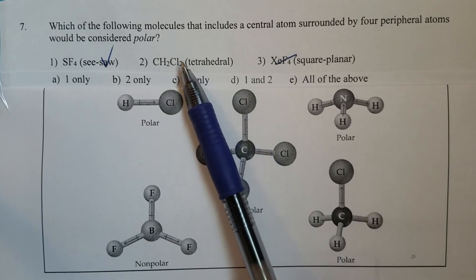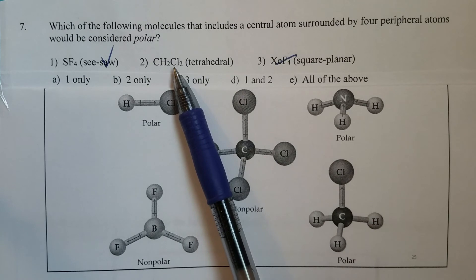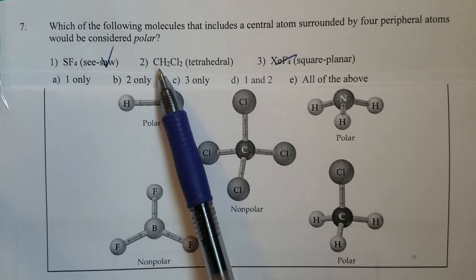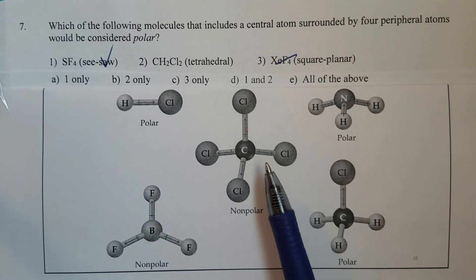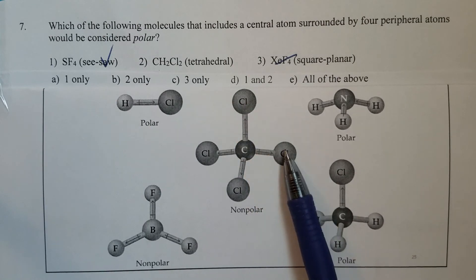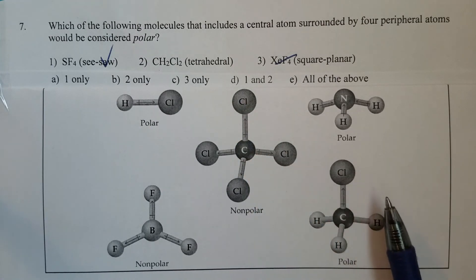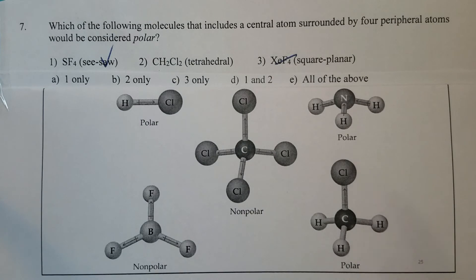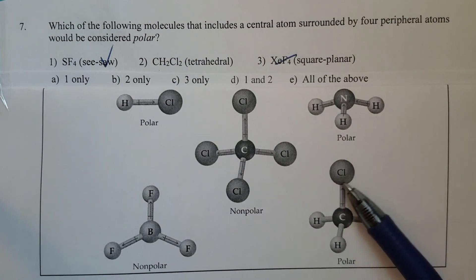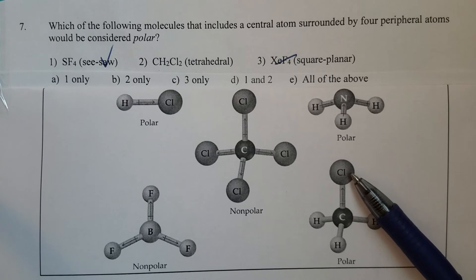But what we have here is dichloromethane, only two chlorine molecules - chlorine atoms. Let's say like in here, this one just has one chlorine atom.